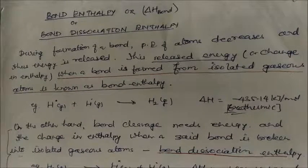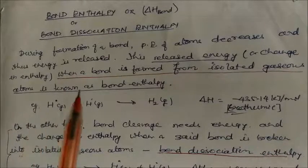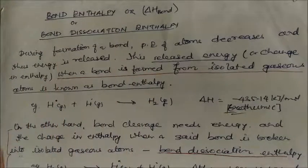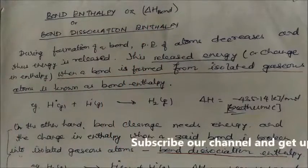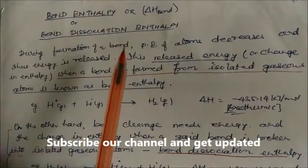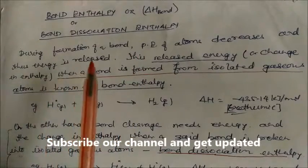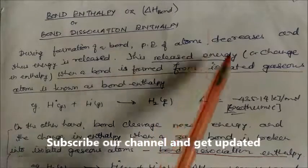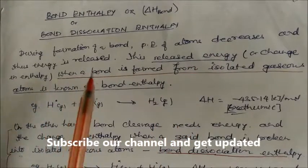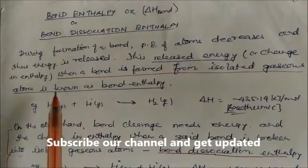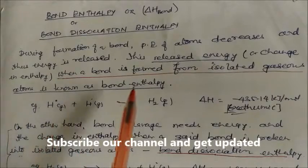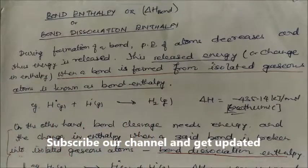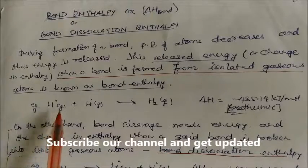Welcome to this session. We will study bond dissociation enthalpy, also called bond enthalpy, written symbolically as ΔH bond. During the formation of a bond, the potential energy of the atoms decreases and energy is released. This released energy or change in enthalpy when a bond is formed from isolated gaseous atoms is called bond enthalpy.